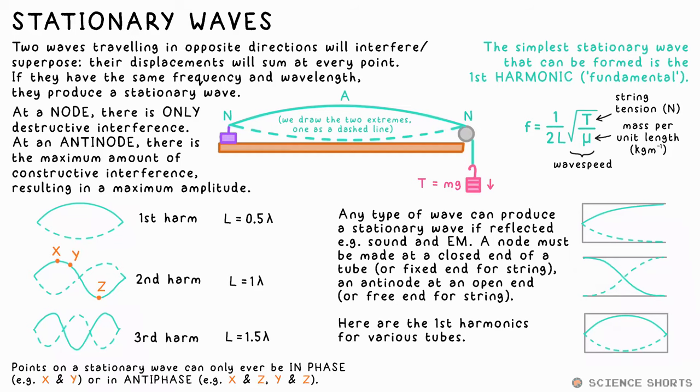Unlike progressive waves, points on stationary waves can only ever be completely in phase or completely out of phase. It just depends on if they're the same side of equilibrium or not. That's because two points above equilibrium will reach their own different amplitude at the same time, and they'll both reach equilibrium at the same time too.